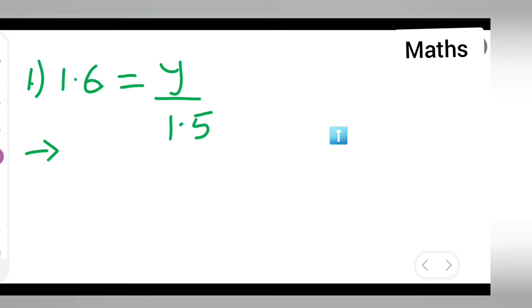First, I'll write down the question: 1.6 is equal to y upon 1.5. So here what I'll have to do is write down y is equal to 1.6 multiplied by 1.5.